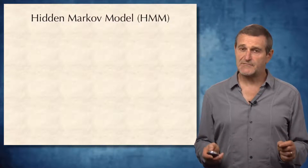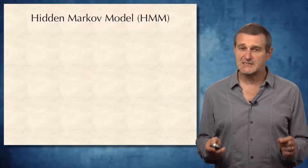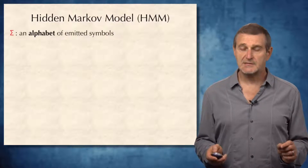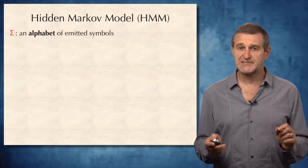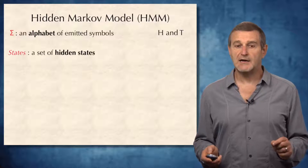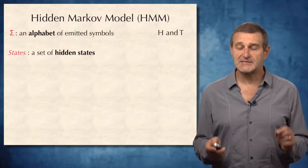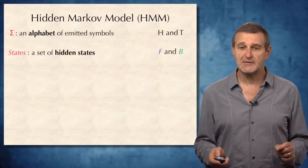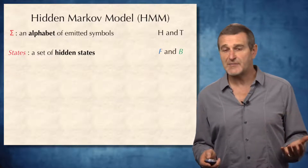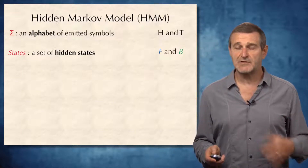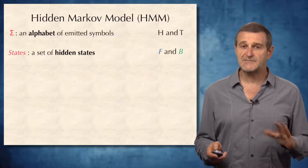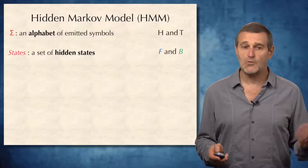Formally, the hidden Markov model is defined by a set of four objects. First, an alphabet of emitted symbols. Second, a set of hidden states of the HMM. In the case of the crook-casino, the alphabet of emitted symbols will be heads or tails, and the set of hidden states will be fair or biased coin.